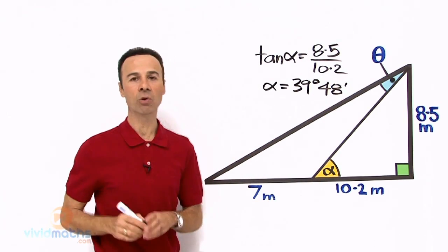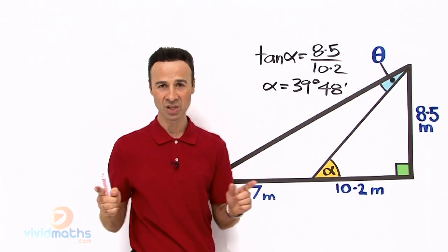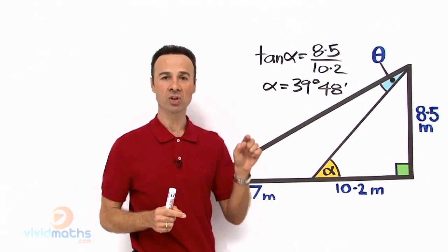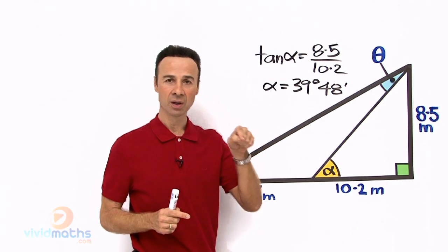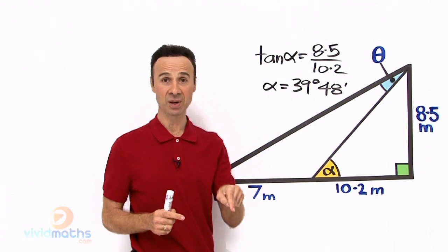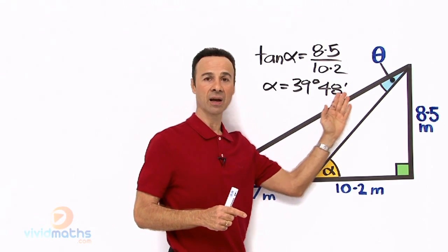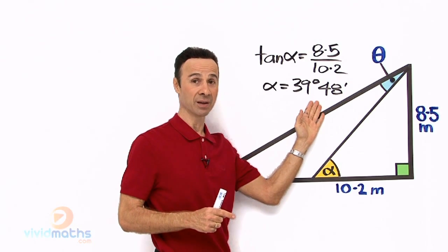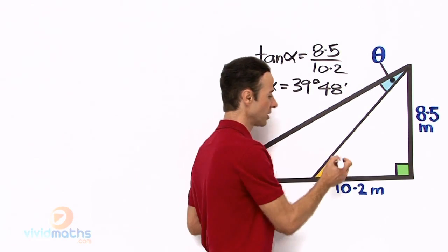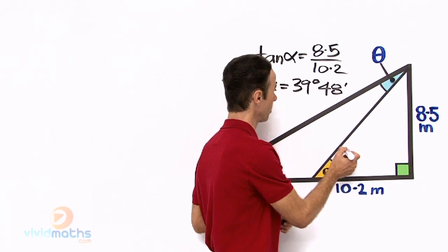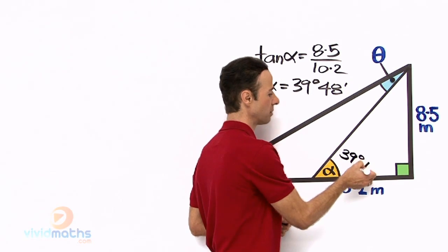To repeat: you go 8.5 divided by 10.2, that gives you a decimal, then Shift 10 gives you a decimal degree, then Shift DMS gives you degrees and minutes — very few seconds so we rounded it up. So this angle here will be 39 degrees and 48 minutes.